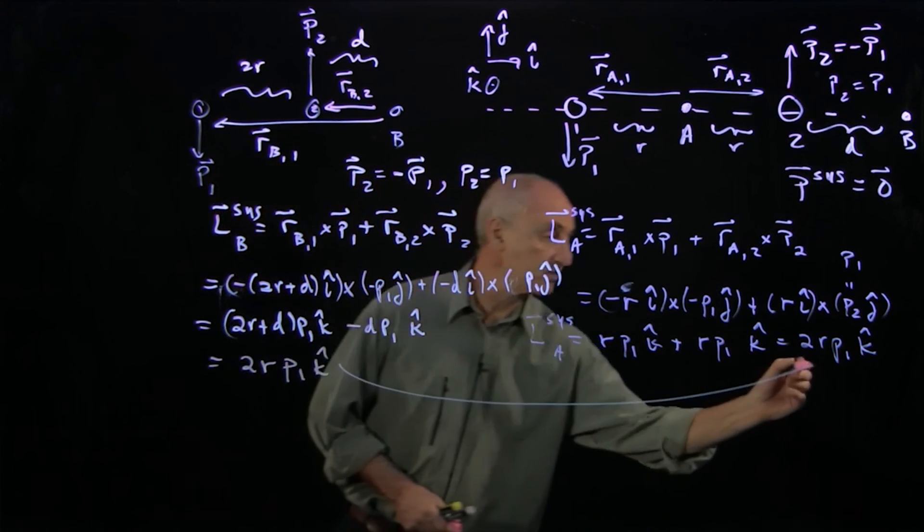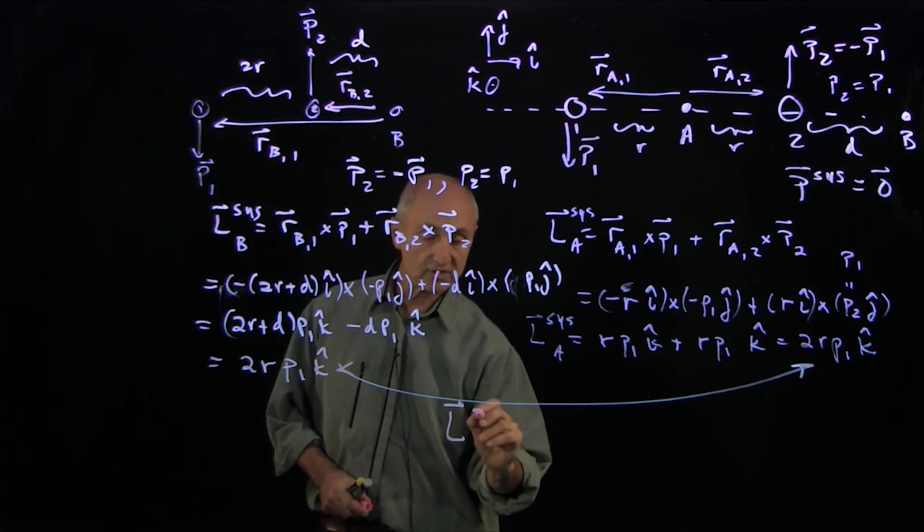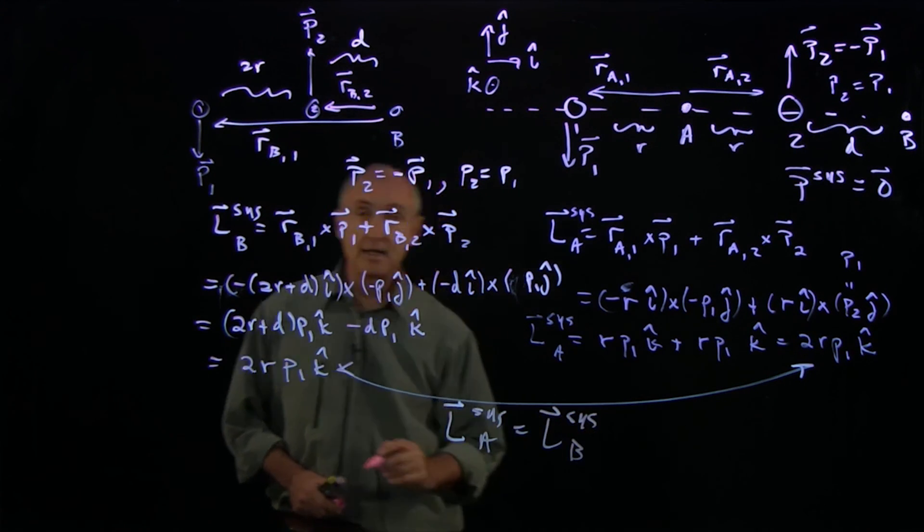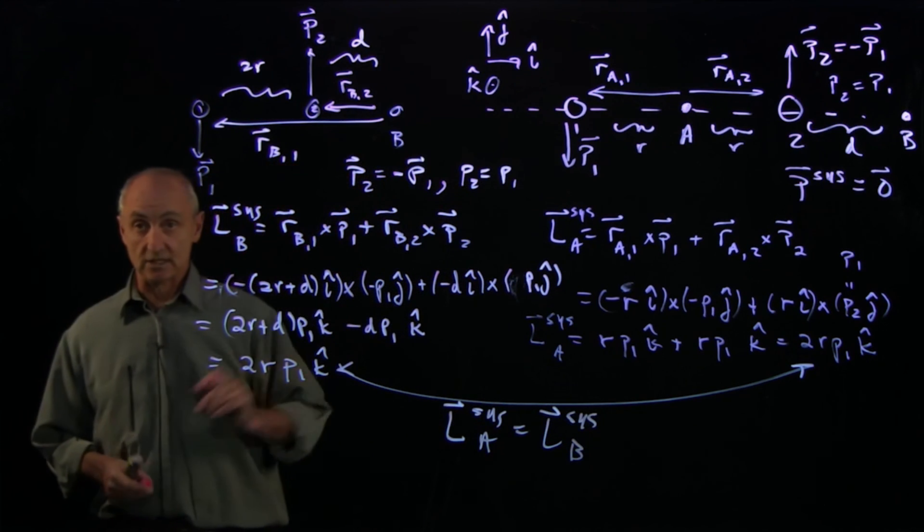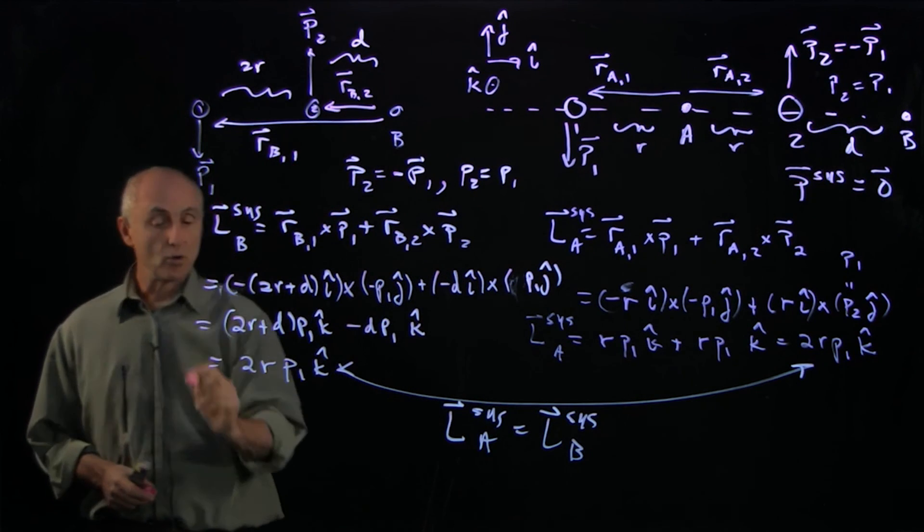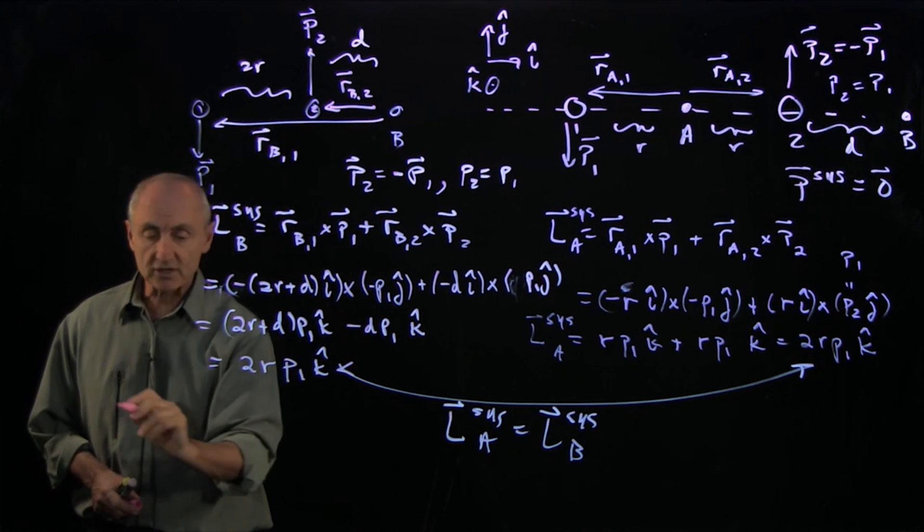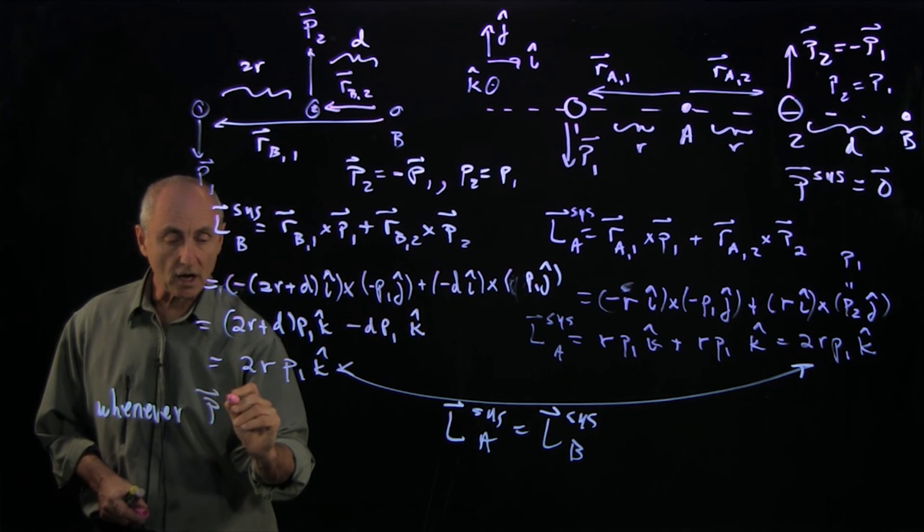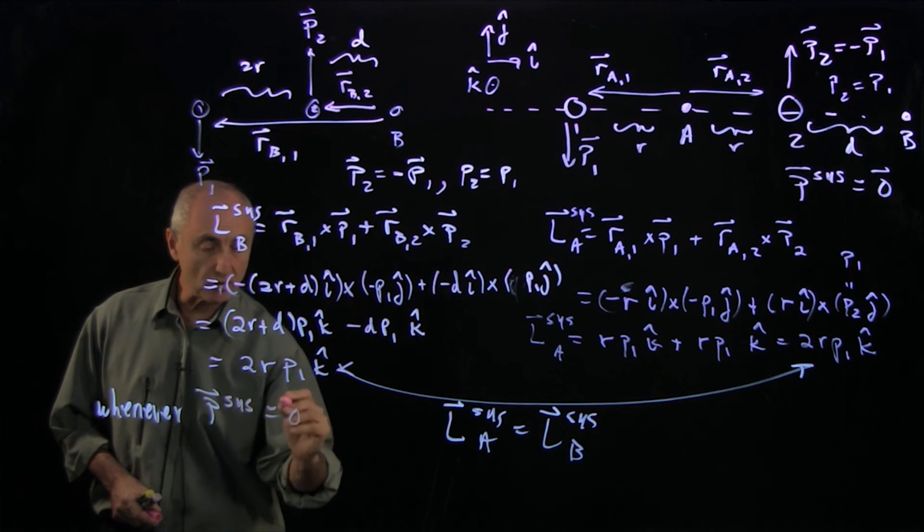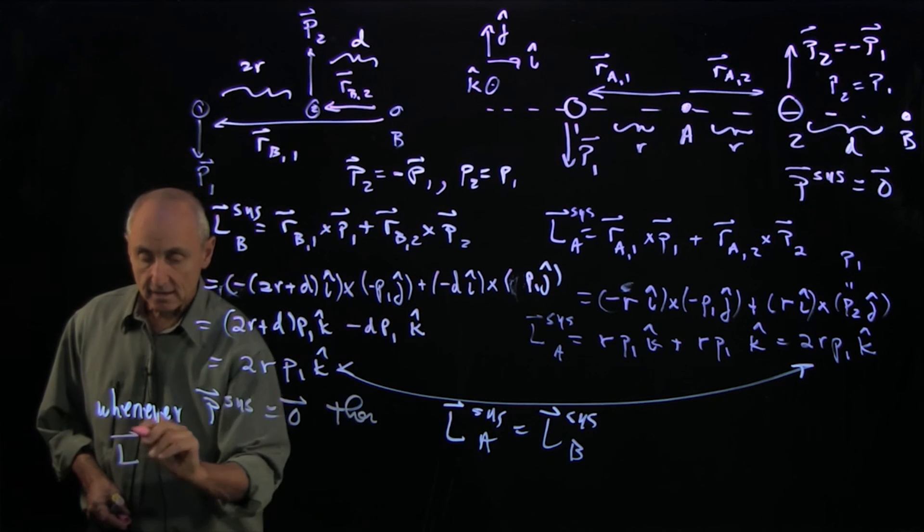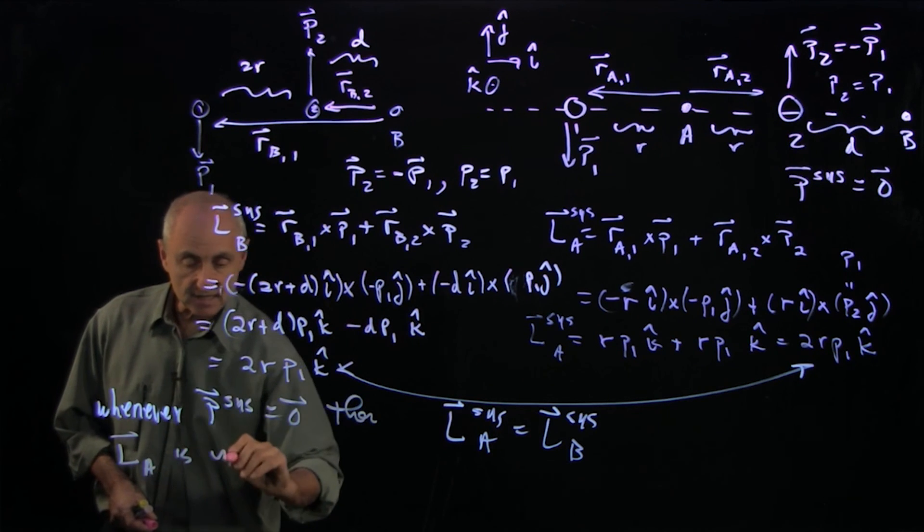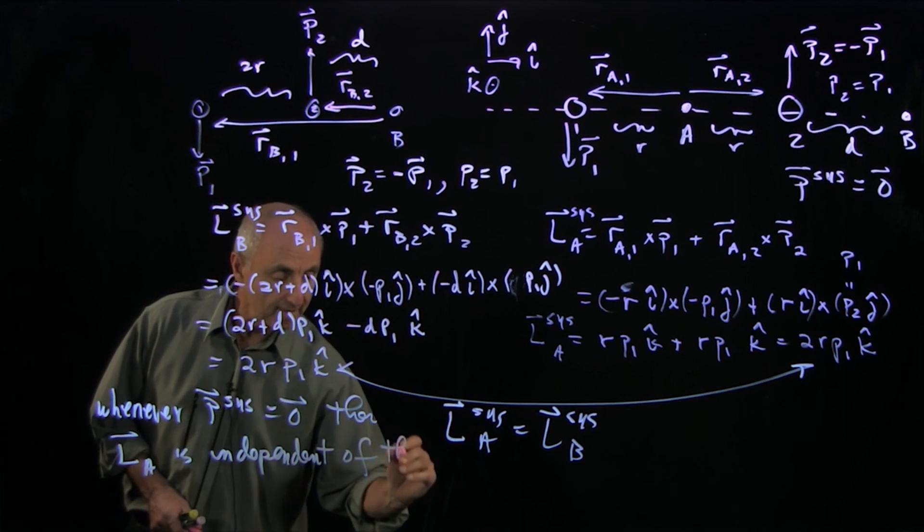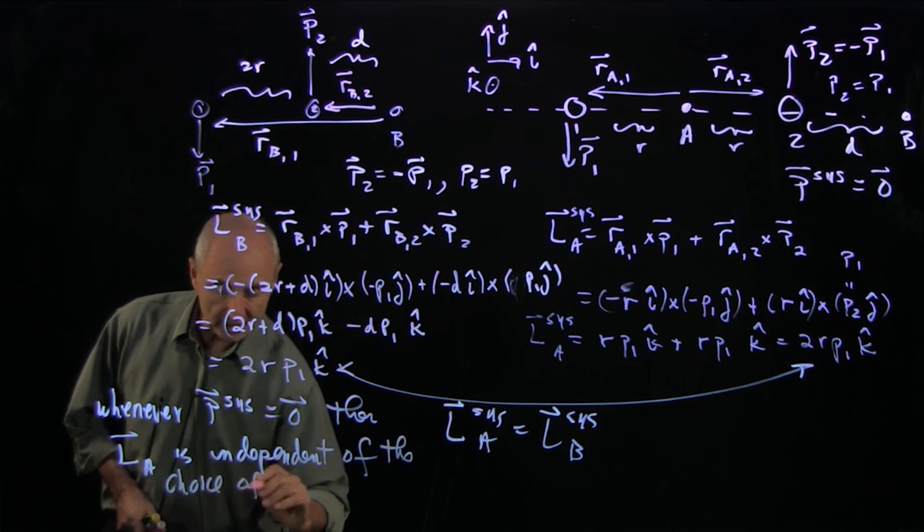And I have the same result. L system A equals L system B. Now that's not a coincidence in this problem. And the reason is that whenever the momentum of the system is 0, then L_A is independent of the choice of the point A.